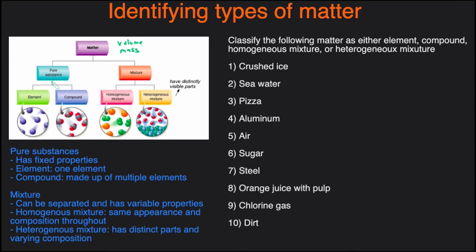Matter can be broken down into two broad categories. You can have a pure substance or you can have a mixture. A pure substance is just made up of a single type of matter. So that could be made up of a single type of element or a single type of compound.